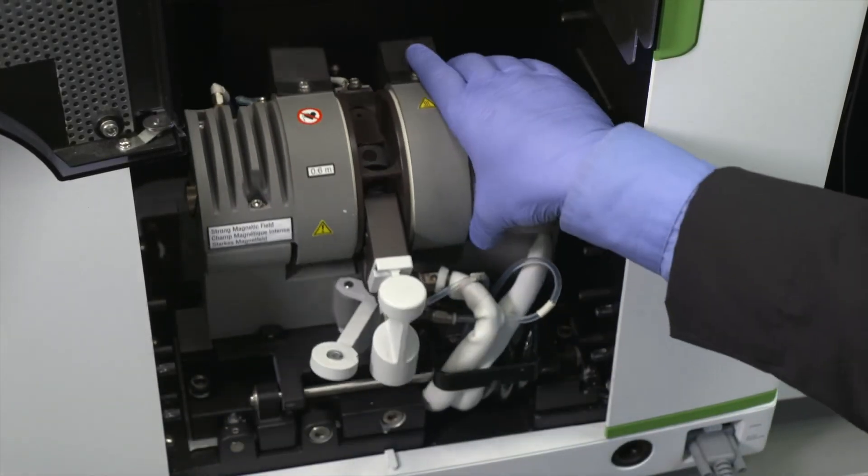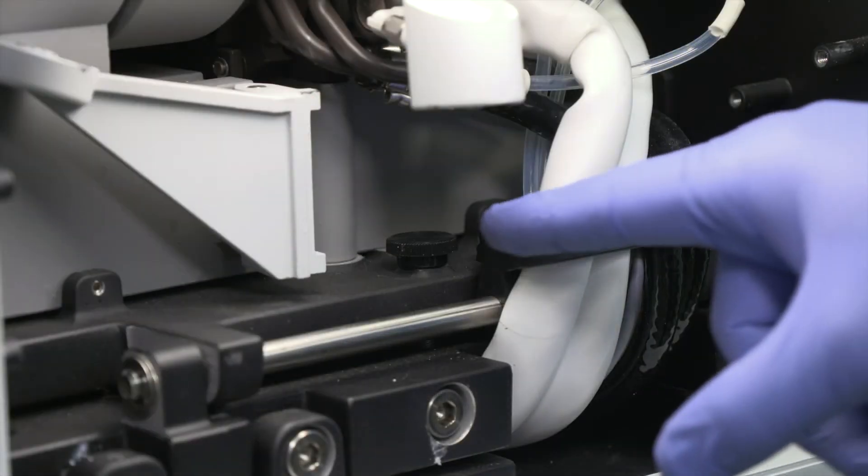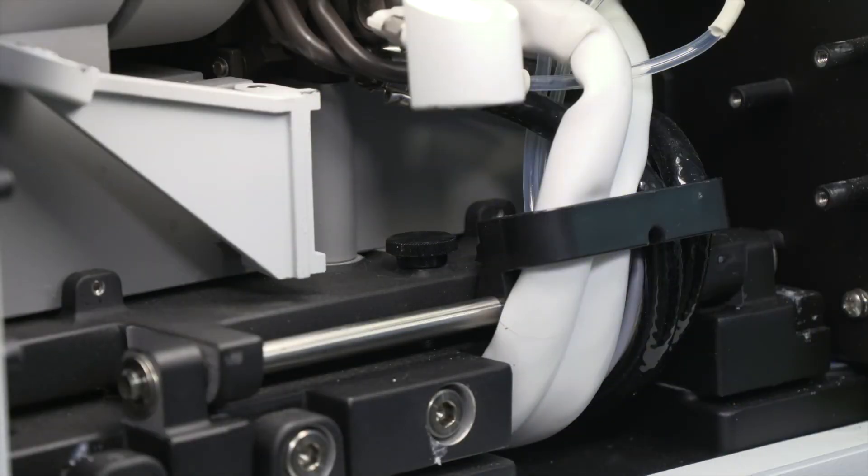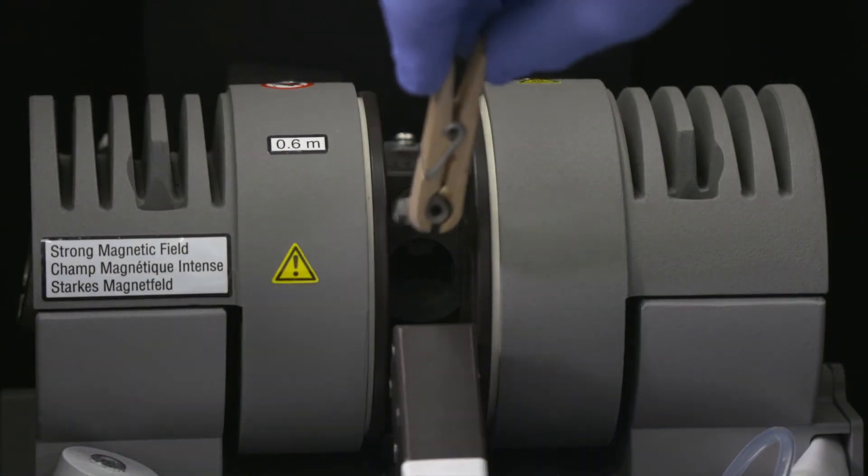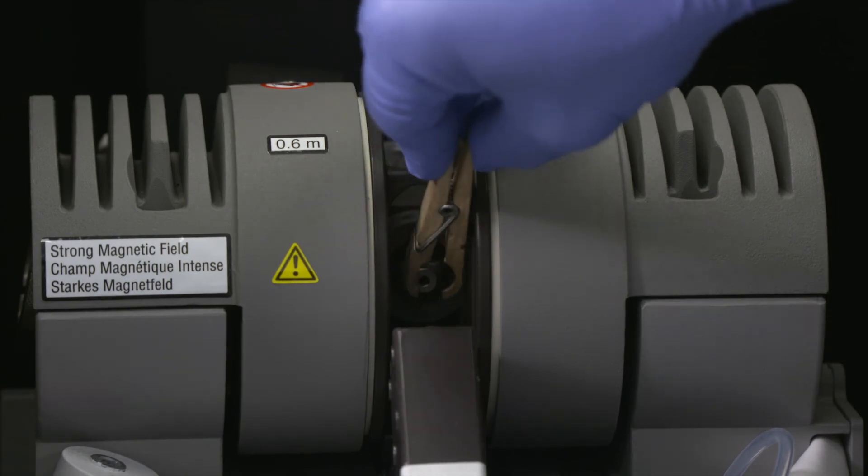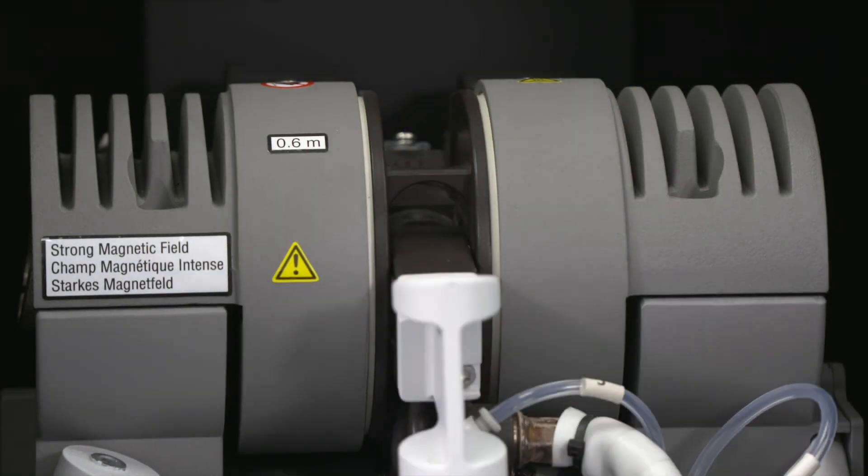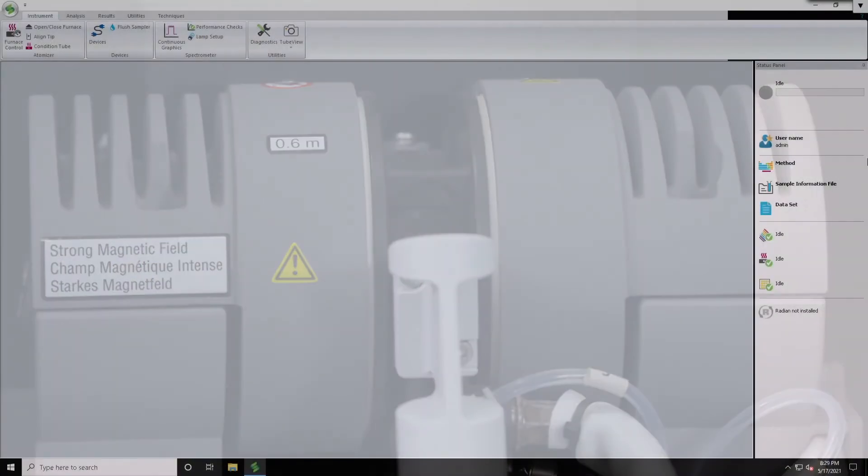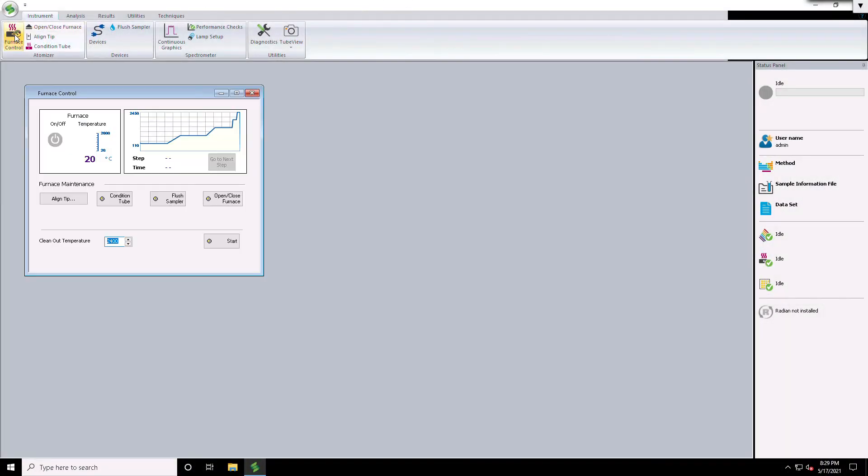Tilt the furnace back to the original position. Tighten the furnace locking screw to lock the furnace into place. Insert a graphite tube into the furnace. Close the front contact housing and swing the support lever under the contact housing. Now your contact cylinders have been replaced. Ensure that you run a tube conditioning step prior to using the system again.